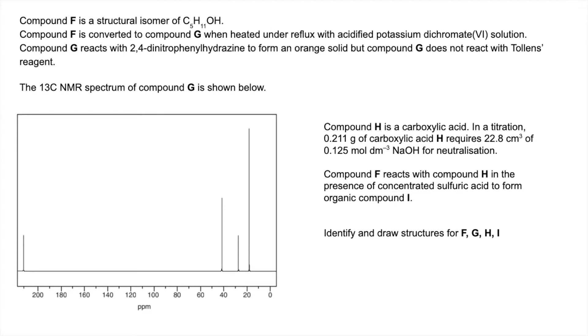So the first thing I would do is, as I'm reading through the information, I'm just going to pick out some key bits of information that are going to help us. So compound F is converted to G when heated under reflux with acidified potassium dichromate(VI), so it's being oxidized.